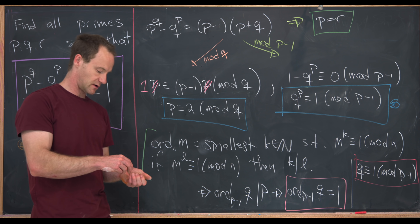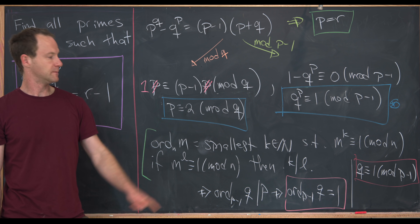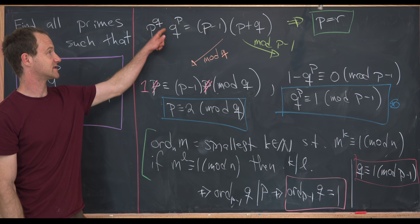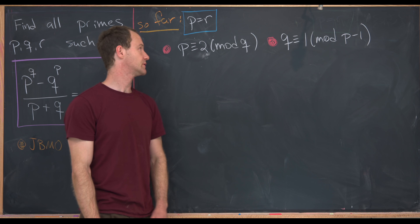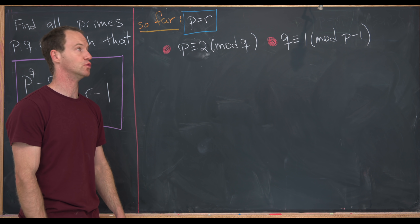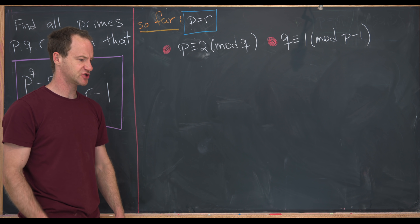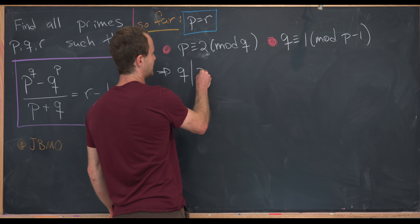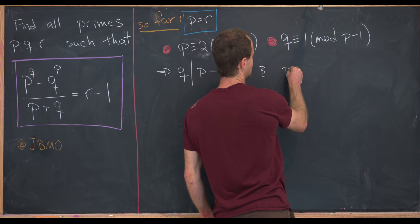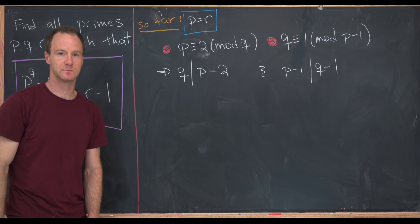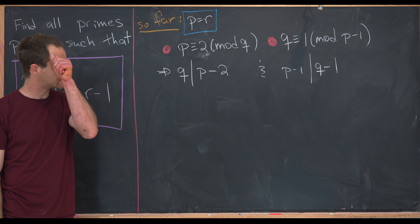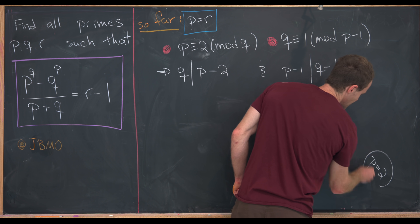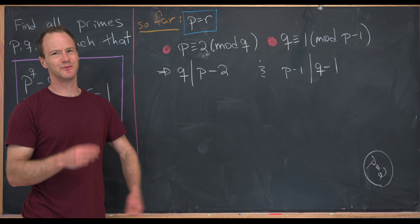We now have two key congruences. From the mod Q reduction, canceling P (since P and Q are relatively prime and distinct): P minus 1 is congruent to 1 mod Q, or P is congruent to 2 mod Q. And from the order argument: Q is congruent to 1 mod P minus 1. Writing these as divisibility relations: Q divides P minus 2, and P minus 1 divides Q minus 1. This splits into two cases depending on whether P equals 2 or not.